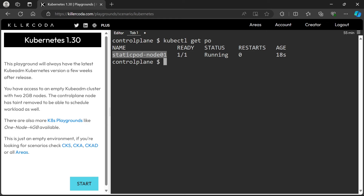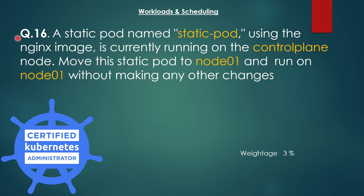Let's go to the next scenario. The next question is also about static pod creation, but from a different perspective. The 16th question is: a static pod named static-pod using the nginx image is currently running on the control plane node. We have to move this static pod to node01 without making any other changes. This is a tricky question. Let's go to the cluster.